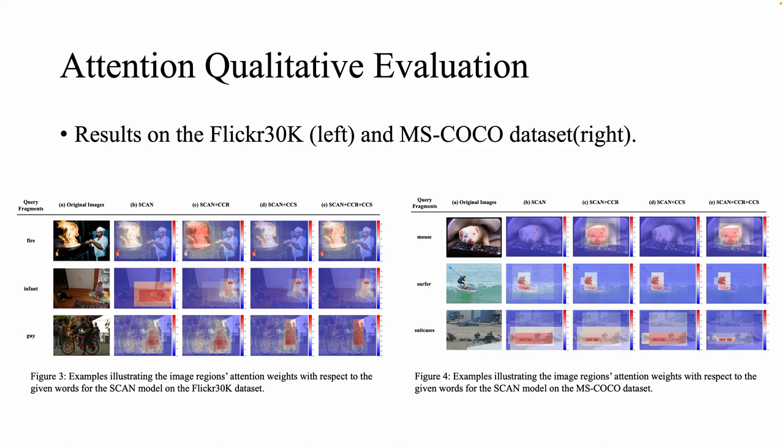In the cases of infant and surfer, SCAN assigns large attention weights to both the irrelevant and relevant regions. In this case, CCR cannot fully diminish the attention weights assigned to the irrelevant regions, but CCS can largely solve the problem.